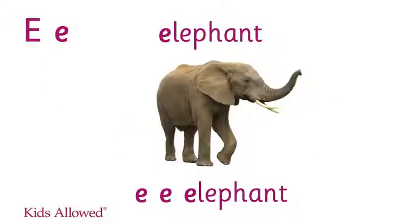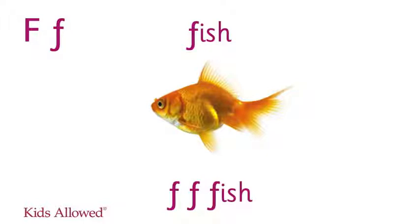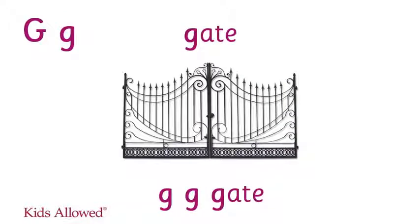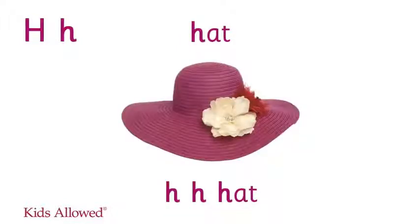E is for elephants. E, elephants. F is for fish. F, fish. G is for gates. G, gates. H is for hats. H, hats.